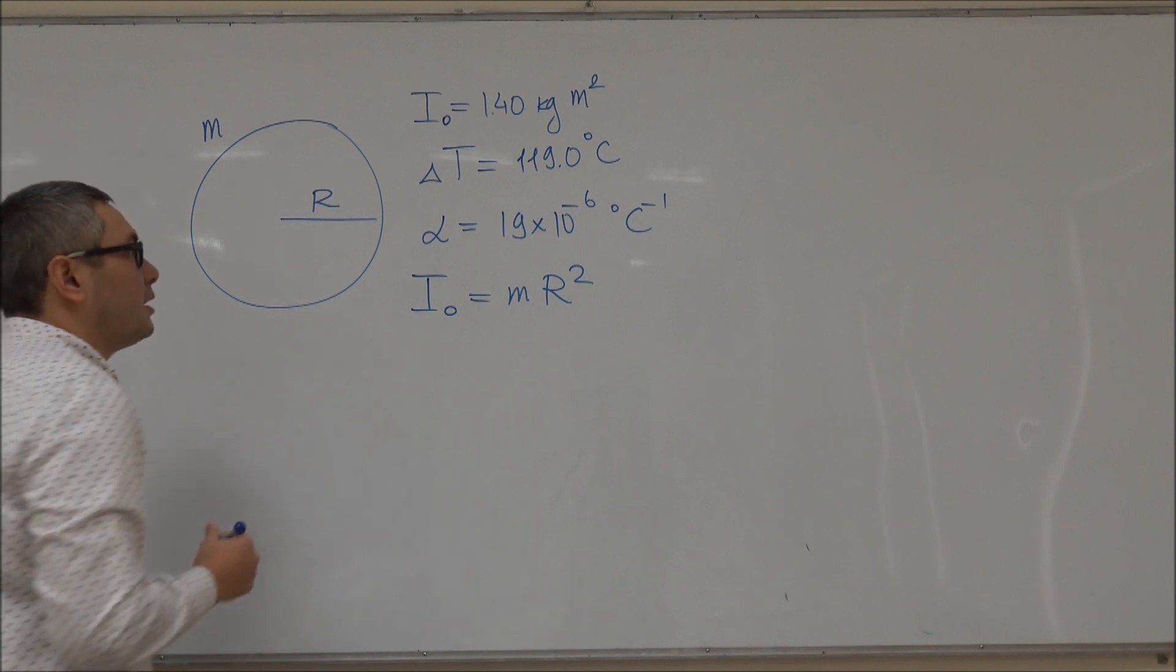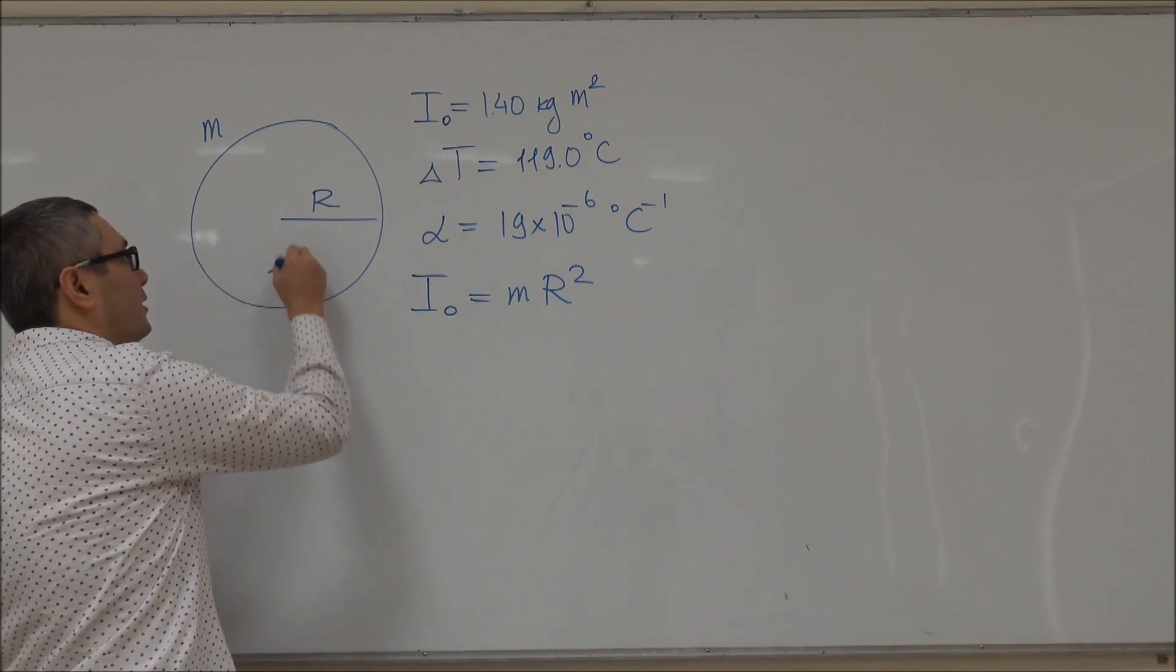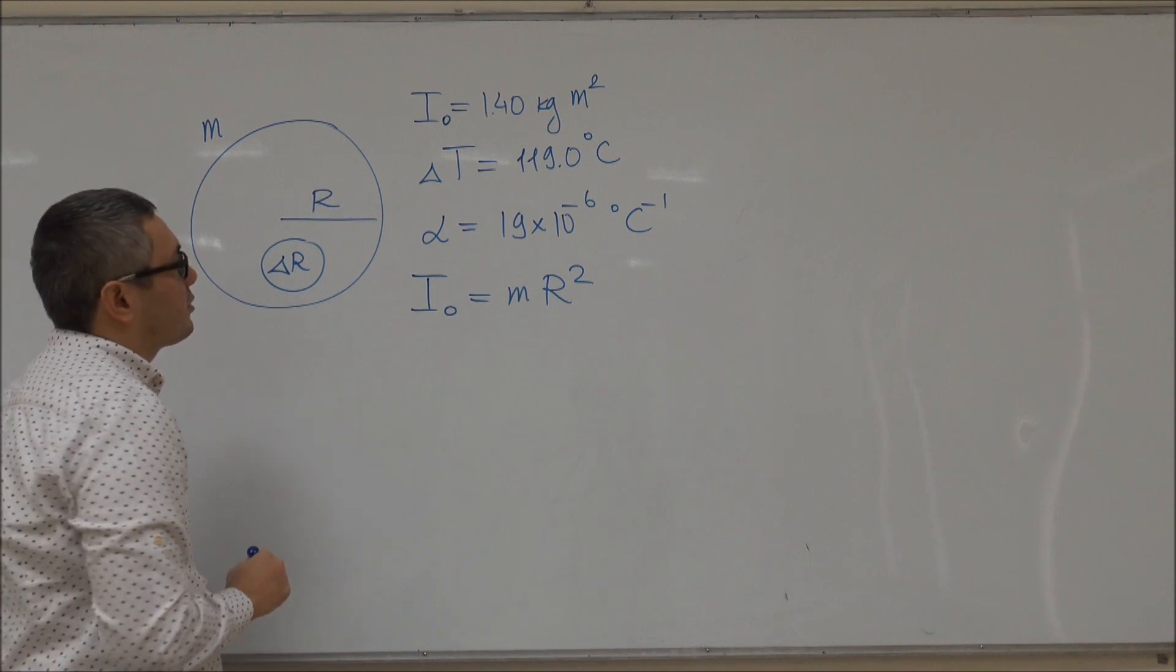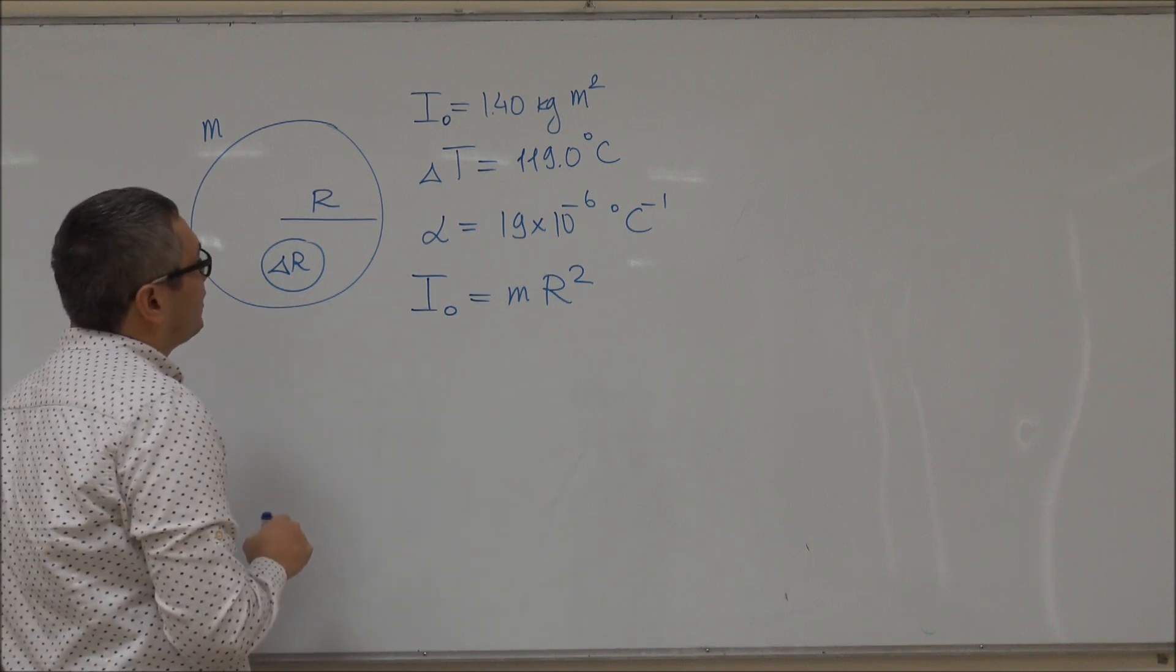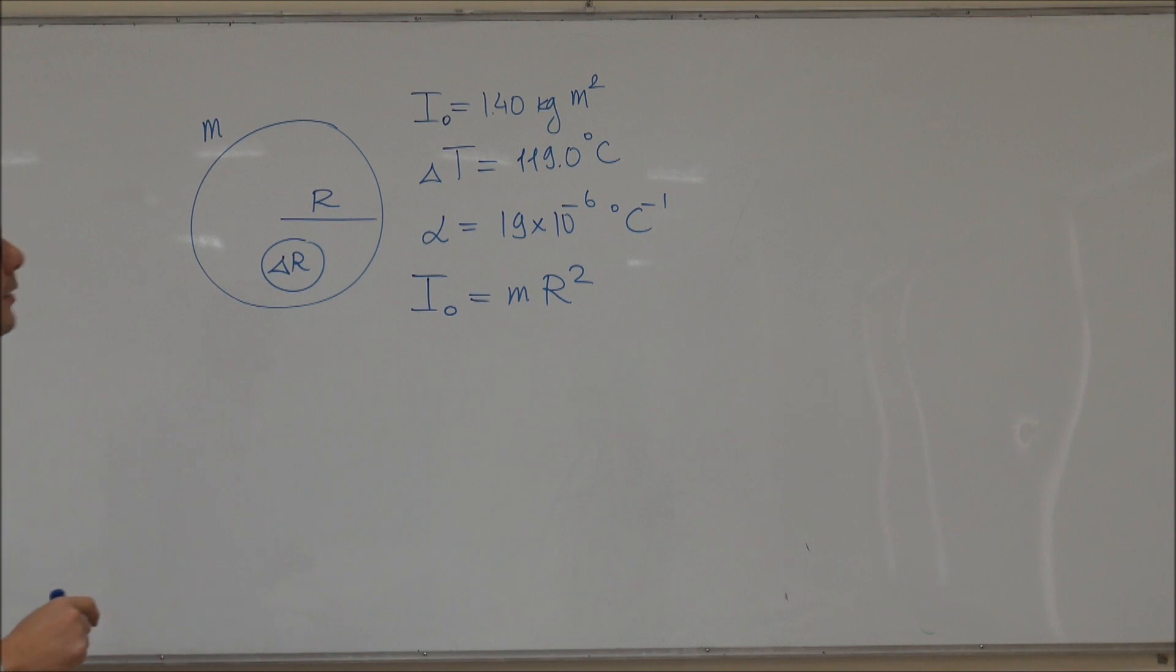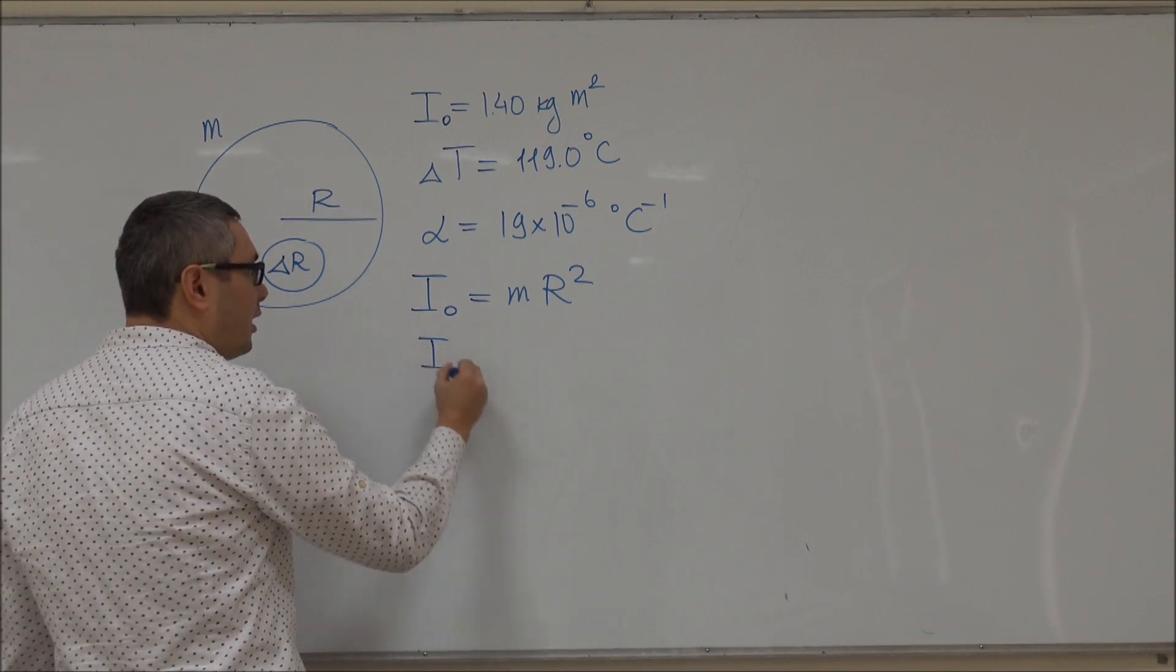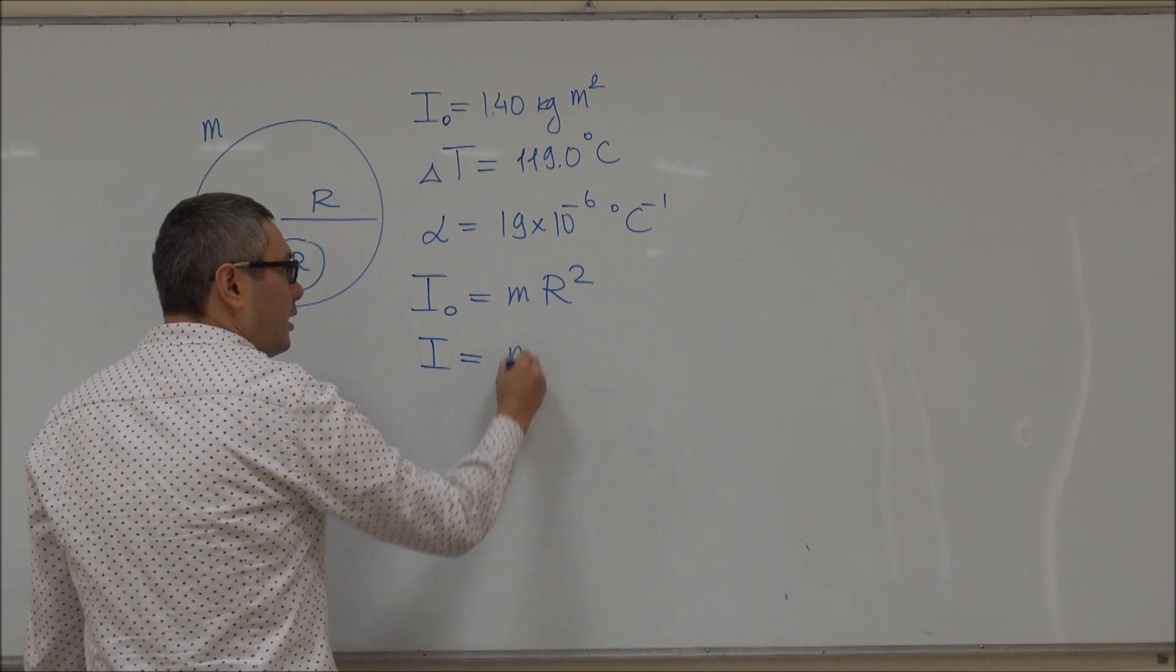So let's say that the radius increases by ΔR due to the thermal linear expansion. The radius of the ring will be bigger by ΔR. So we can then say the new moment of inertia I is then equal to M times (R + ΔR)².